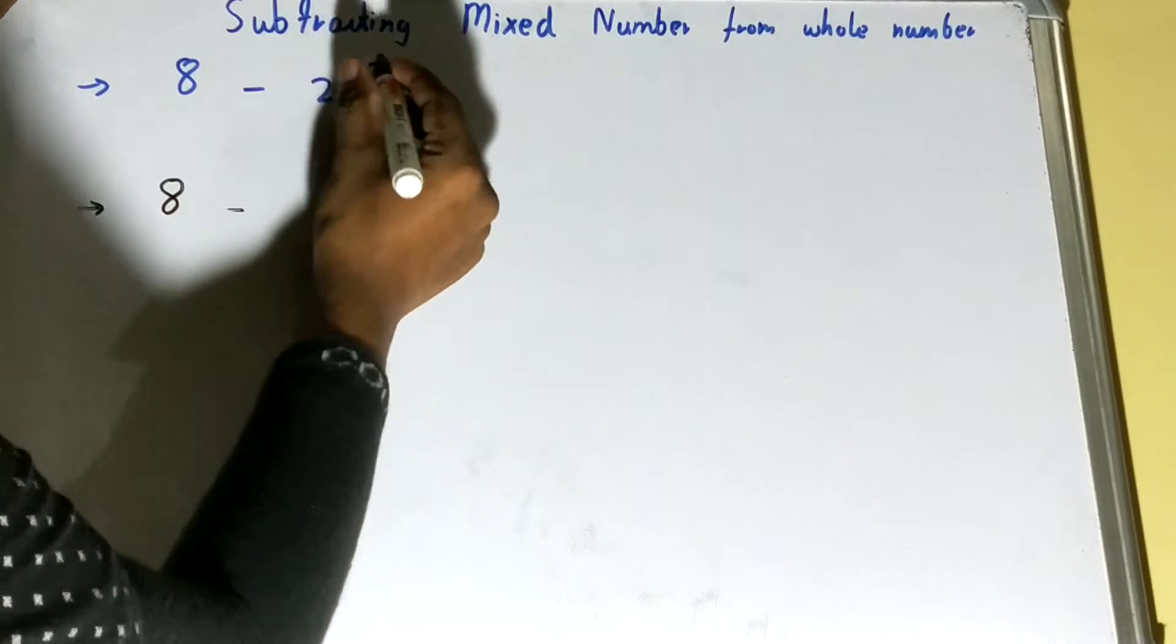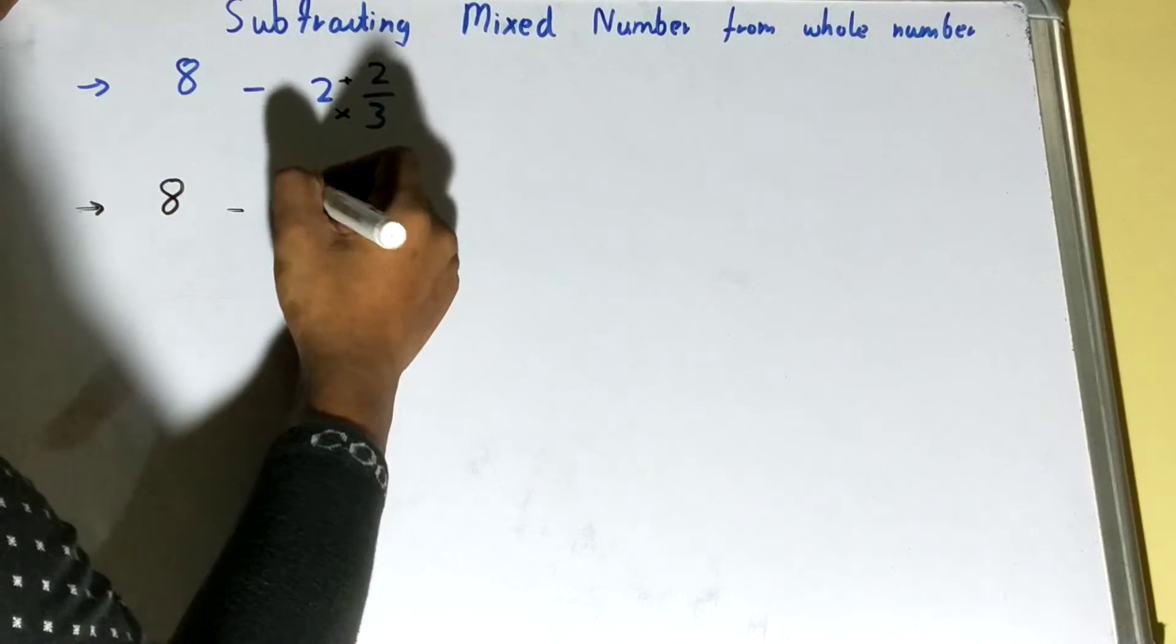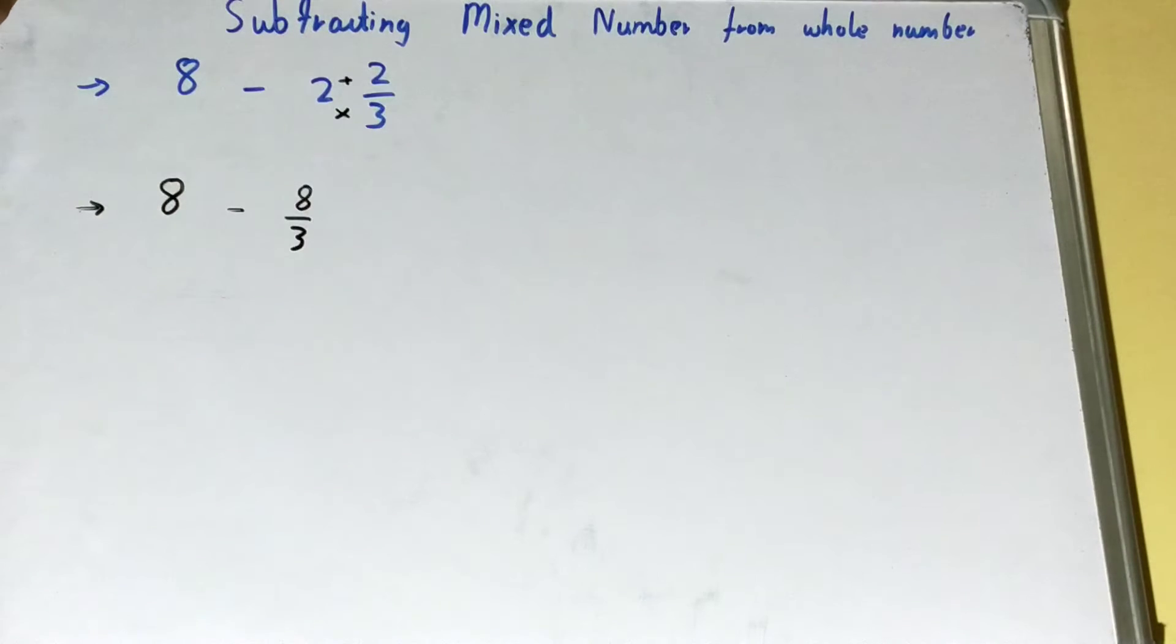The second thing you need to know is step 2: the denominator of any whole number is always 1. If you know it, then you can see here you got a fraction, and here also you got a fraction.